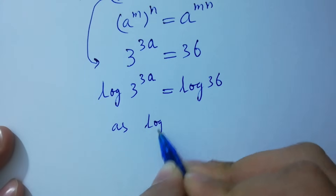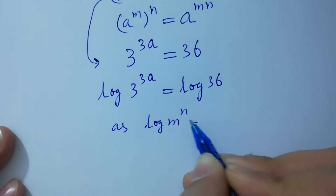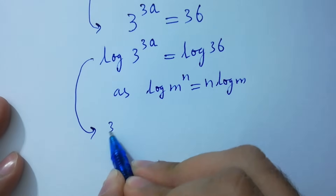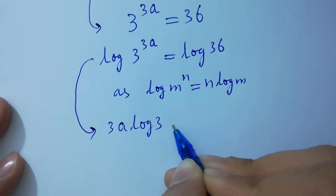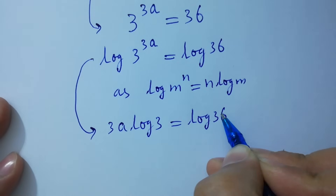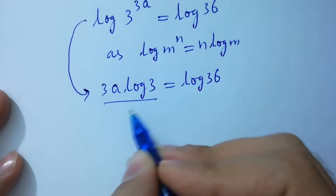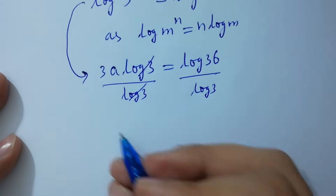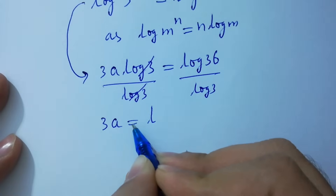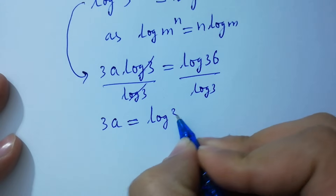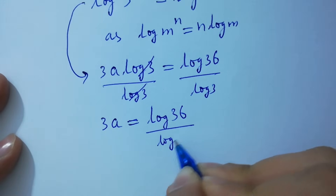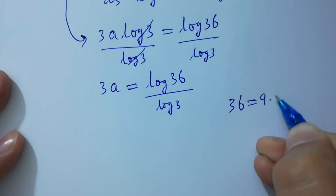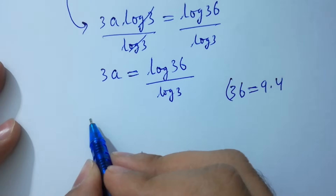As log m to the power n equals n log m, we get 3a log 3 equals log 36. Divide by log 3 on both sides — log 3 cancels — giving 3a equals log 36 over log 3.